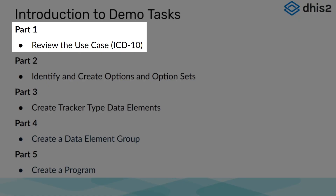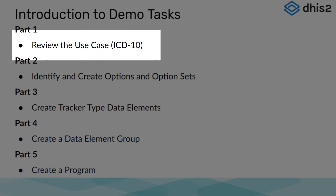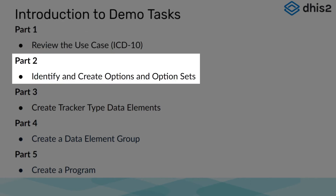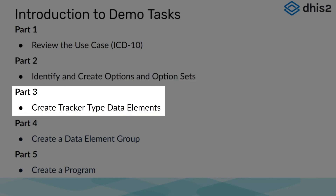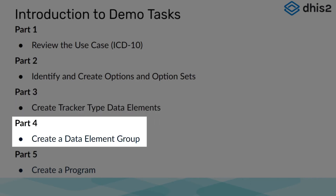First, we will review the finished event program in the Capture app so we can see what we are building before we actually build it. We will also review what the paper register looks like to see how this gets transferred over to the DHIS2 data model. In Part 2, we will describe and create options and option sets for the data elements used in the program. In Part 3, we will then create the data elements. In Part 4, we will add the data elements to a data element group.